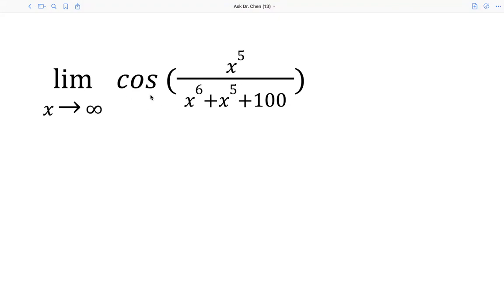Cosine is a continuous function, so cosine is continuous at all real numbers, which means we can push this limit inside because cosine is continuous for all real numbers.